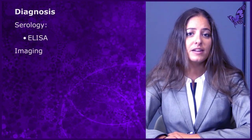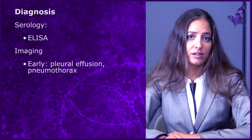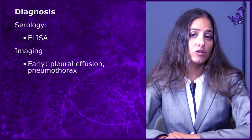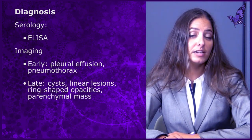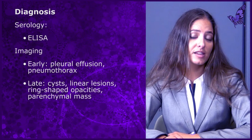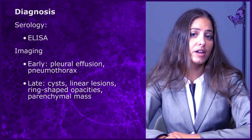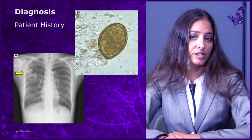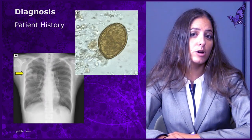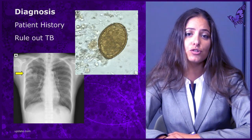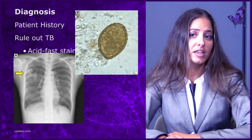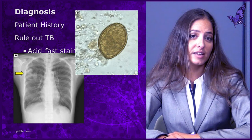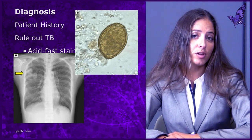ELISA testing is also available. On imaging during early infection, one can see pleural effusion or pneumothorax. Late infection may show cysts, linear lesions, ring-shaped opacities, and parenchymal masses. Careful patient history should include travel history, diet, and place of origin. Tuberculosis should remain on the differential. Keep in mind that an acid-fast stain destroys lung fluke eggs.